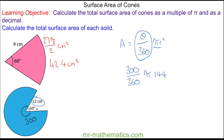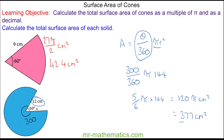So we have 300 over 360 multiplied by pi times 12 squared, which is 144. We can simplify 300 over 360 to five sixths of pi times 144. This simplifies to make 120 pi centimeters squared, which we can approximate as a decimal as 377 centimeters squared to three significant figures.